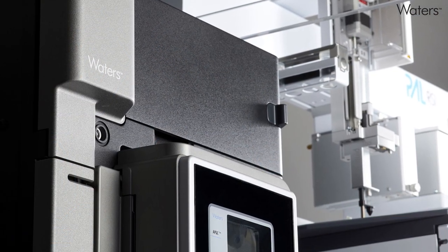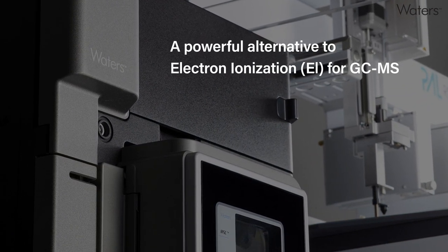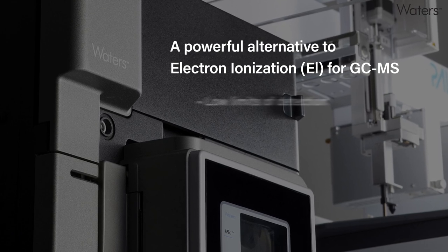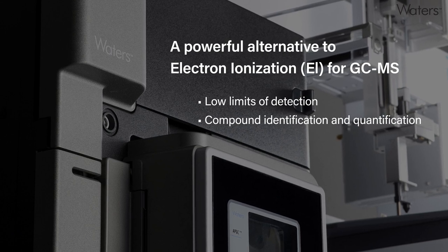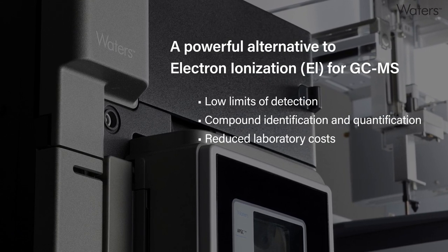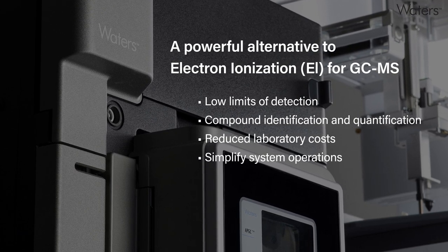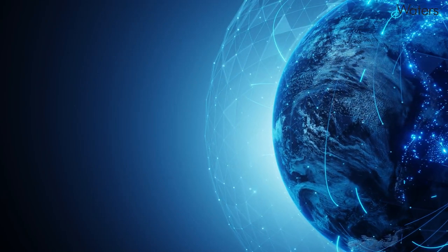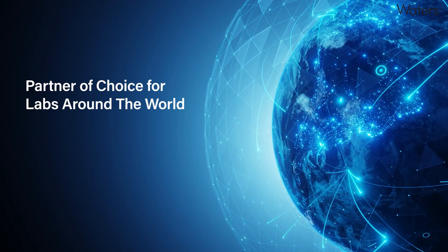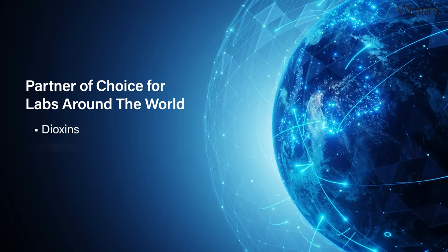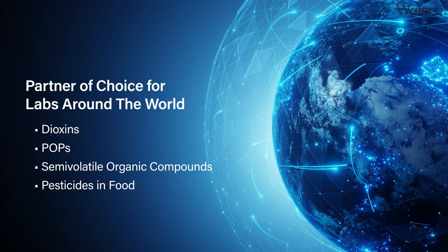Waters Corporation offers APGC technology as a powerful alternative to electron ionization for GC-MS, providing very low limits of detection and confident compound identification and quantification, reducing laboratory costs through reduced GC maintenance, and simplifying system operation to drive productivity. Together, these capabilities have helped make Waters a partner of choice for labs around the world, working on challenging analyses such as dioxins, persistent organic pollutants, semi-volatile organic compounds, and pesticides in food.